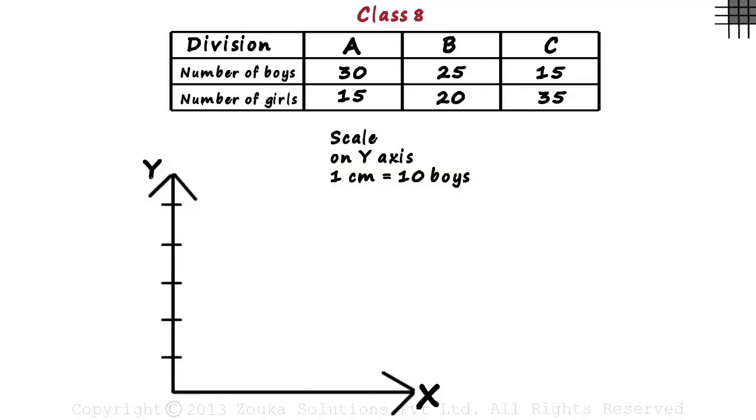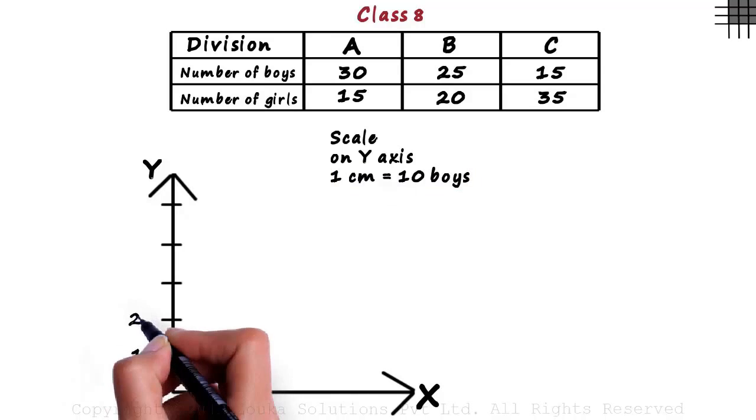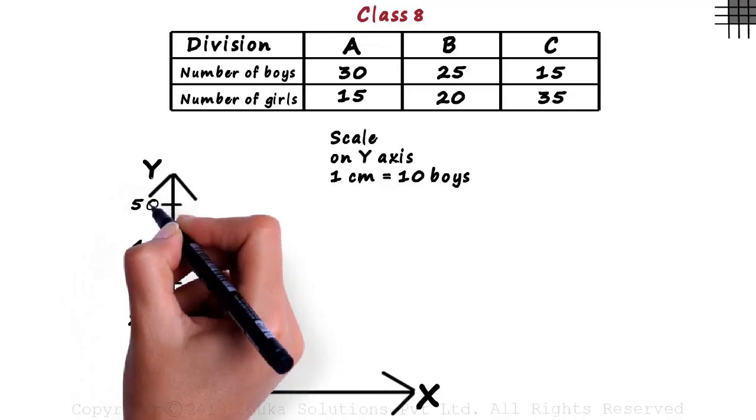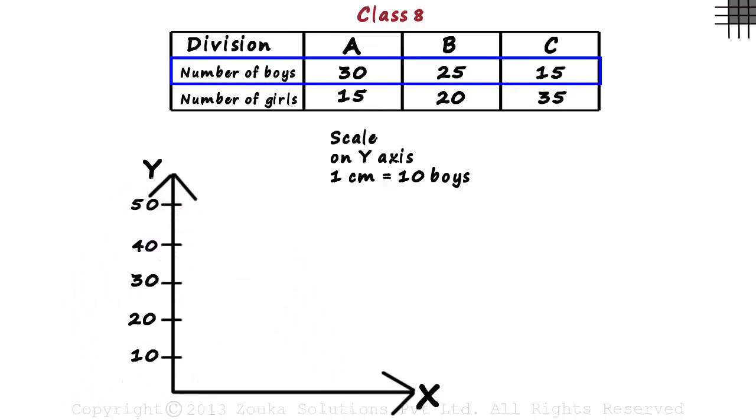So we write 10 to 50 marking equal intervals of 10. This covers the data range for the boys of Class 8, and we have divisions A, B and C on the x axis.